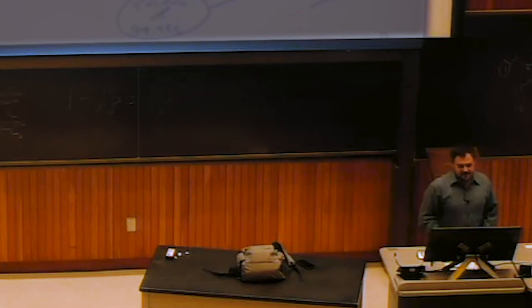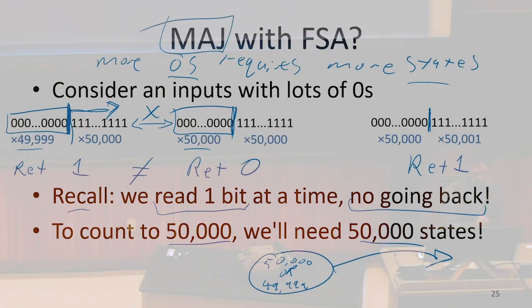So there are going to be things we can't do with finite state automata, for instance majority, that are simple to do with other models of computation, for instance Python.